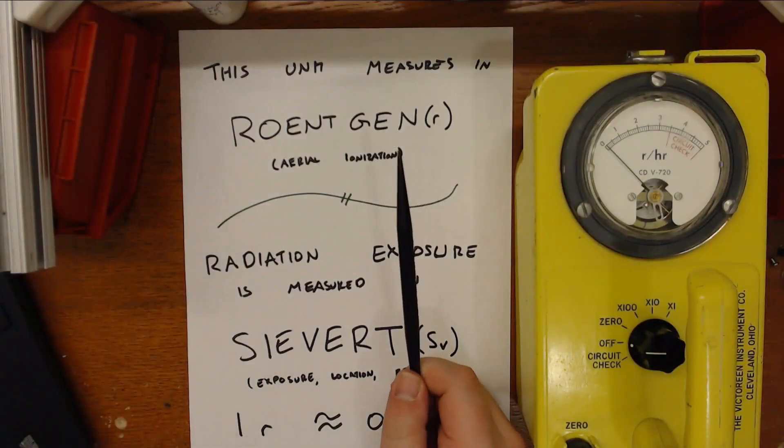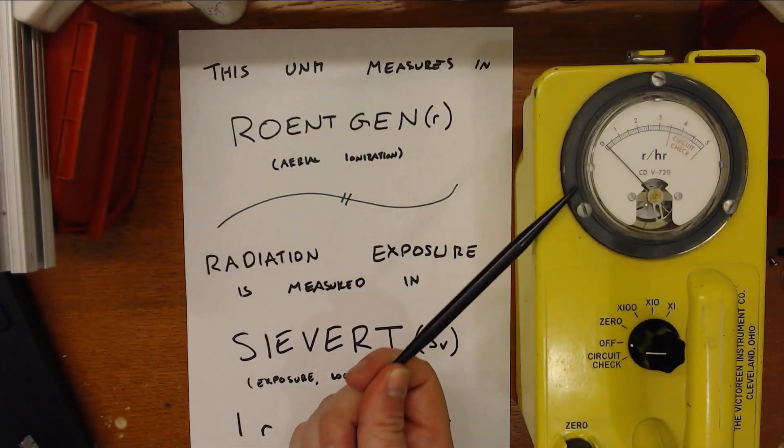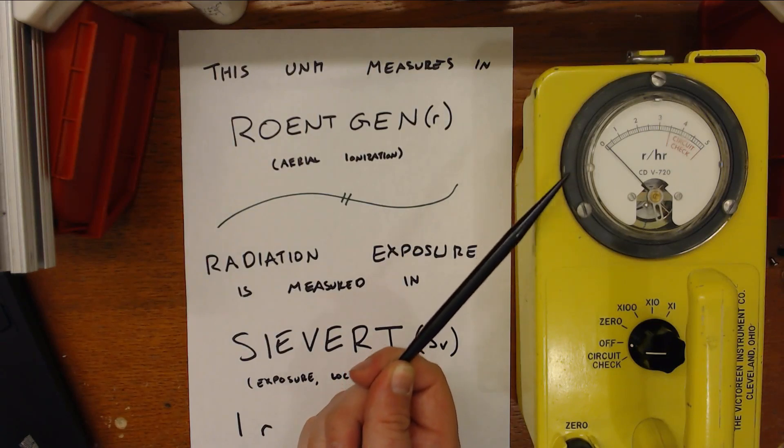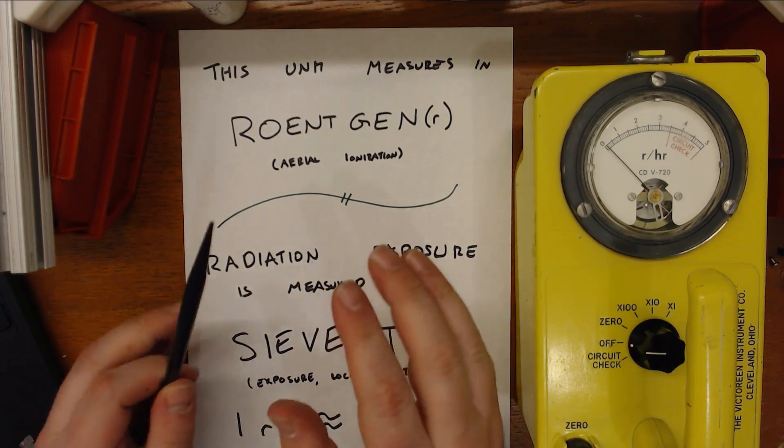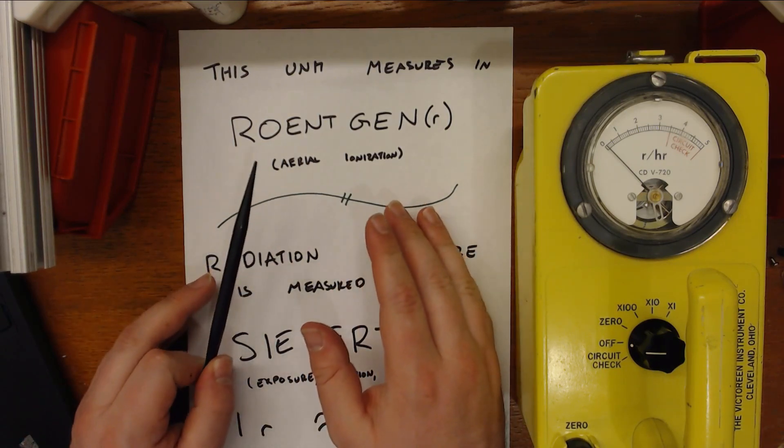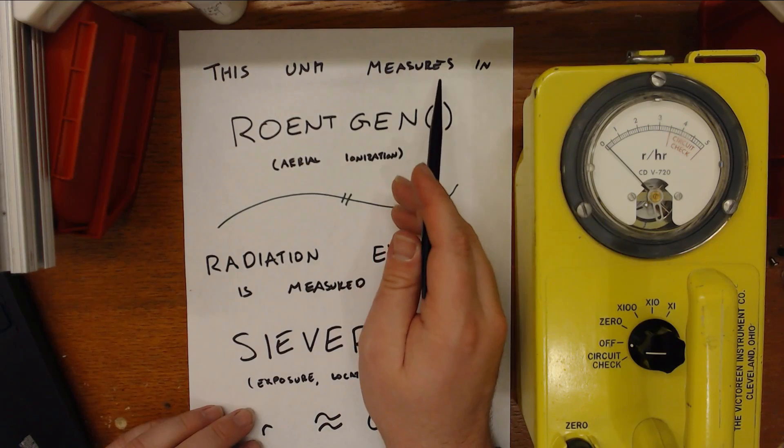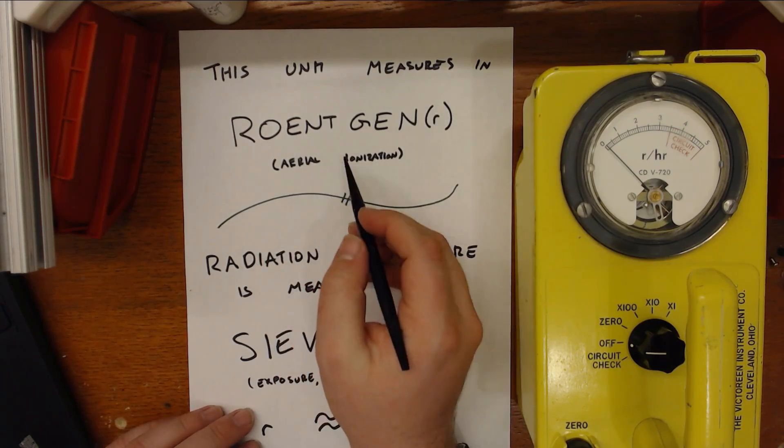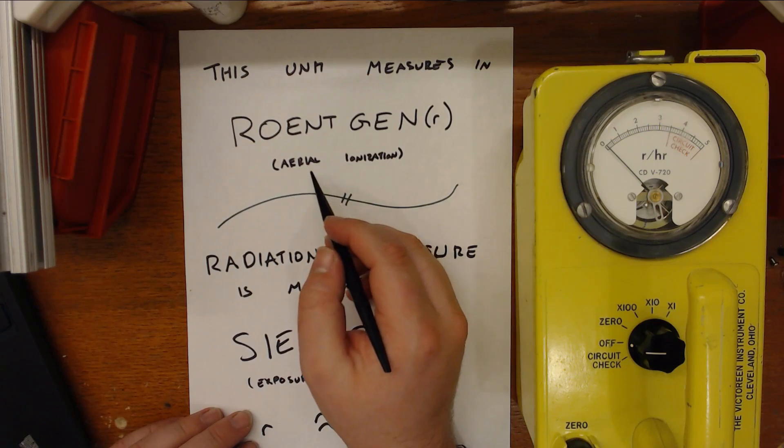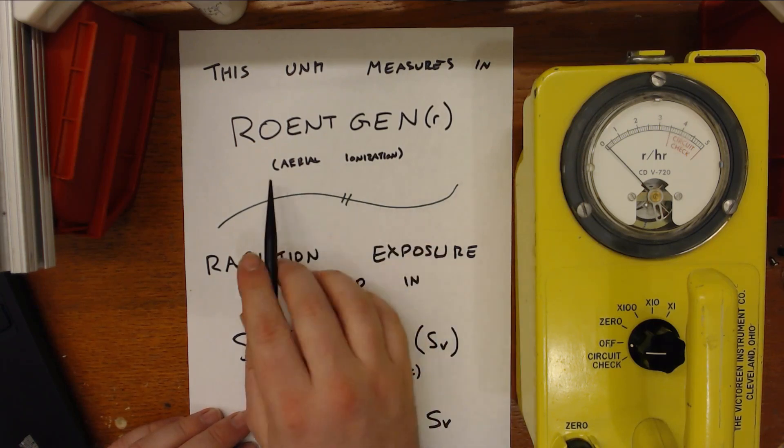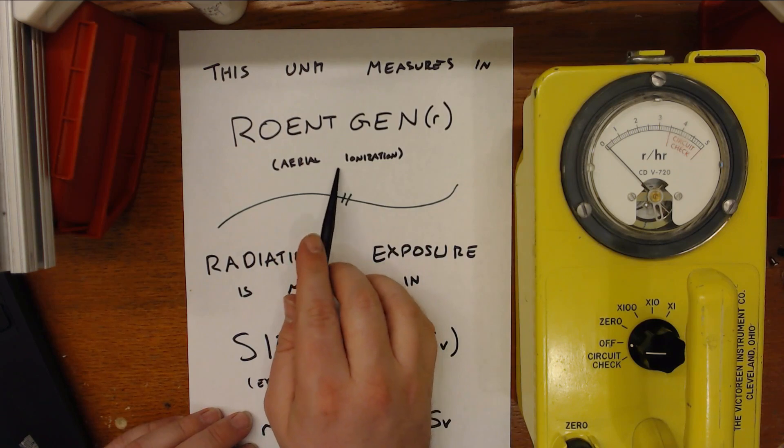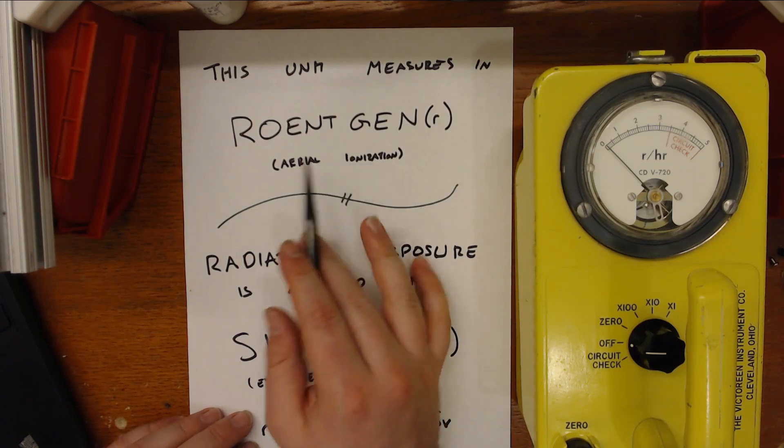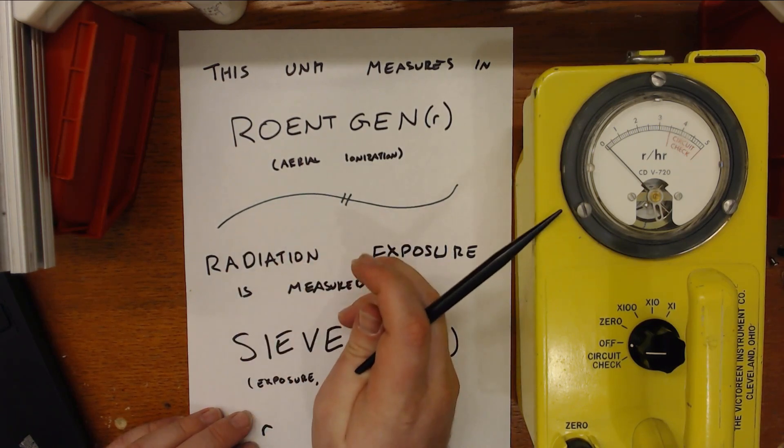So after doing a bit more research, it's actually a really good thing that this meter isn't showing anything right now because of the staggeringly high levels of radiation that it's meant to measure. So first, a quick overview of some radiation terminology. So this unit is measuring in Roentgen per hour. And Roentgen is this old non-SI unit that measures airborne or aerial ionization, specifically the amount of energy in gamma or alpha or beta particles that's coming out of the air being presented to the detector.